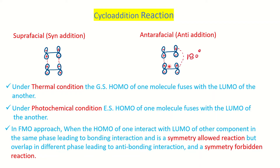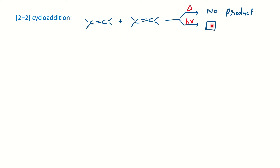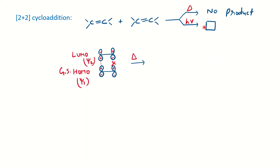Now applying this to the 2+2 system: 2+2 cycloaddition is photochemically active while thermally it is inactive. Under thermal conditions, we take the ground state HOMO of one molecule and the LUMO of the other. Taking ethene as an example, it has 2 pi electrons and two orbitals ψ1 and ψ2. Both electrons fall in ψ1 in the ground state, so the ground state HOMO is ψ1.